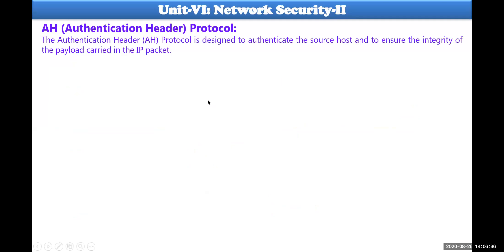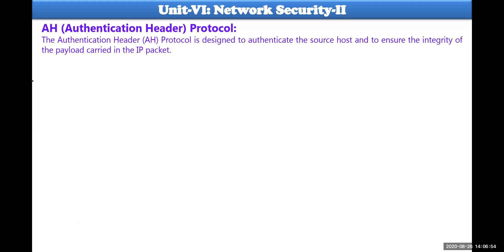The authentication header protocol is designed to authenticate the source entity. The source entity is being authenticated by providing integrity of the data which is being carried from source to destination. The payload is the original plain text which is being processed, and AH is used to provide authentication of the source entity or source host.